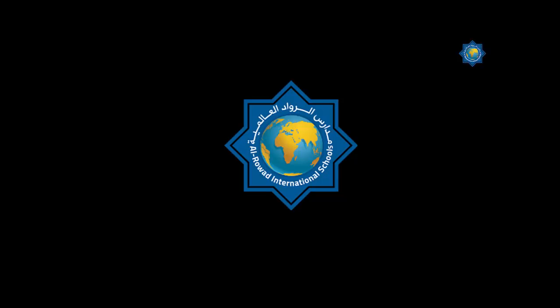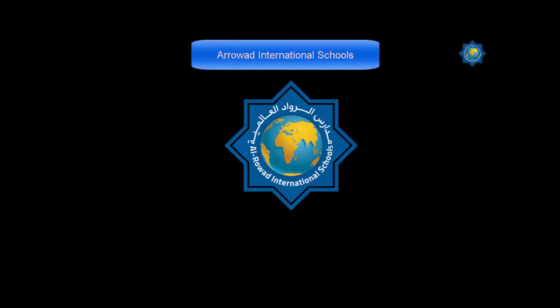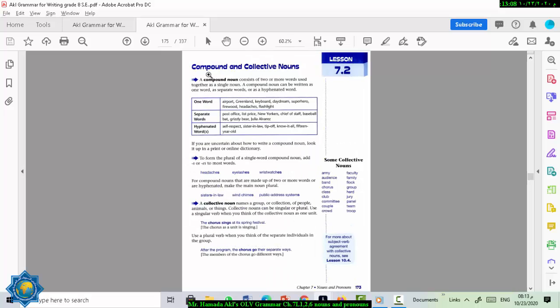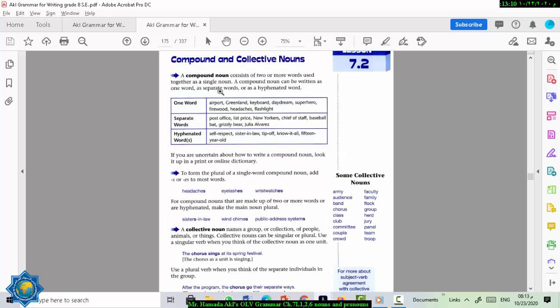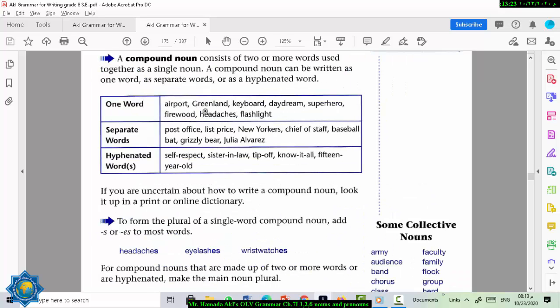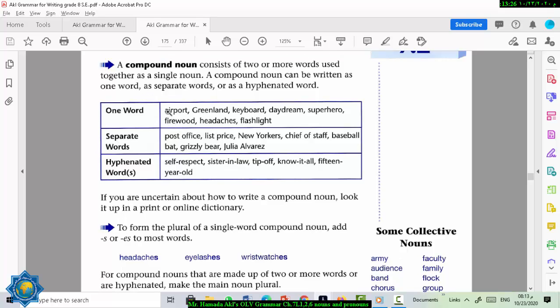Now, let's move to the next lesson. That's page 173. Compound and collective nouns. Compound nouns consist of two or more words used together as a singular noun. A compound noun can be written as one word or separate words, or can be also hyphenated, like here.